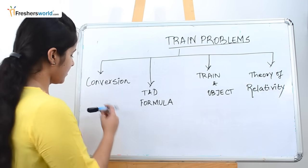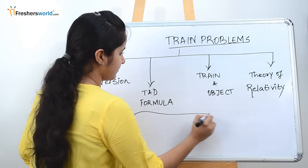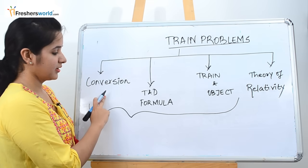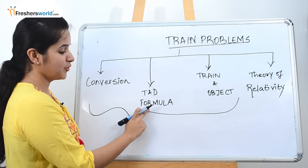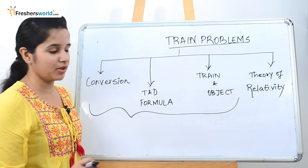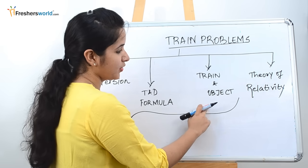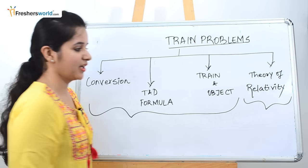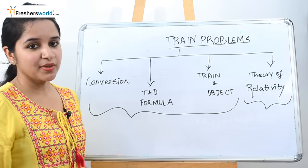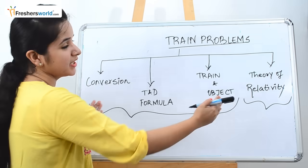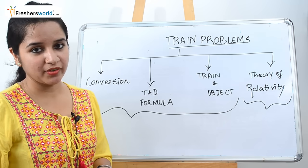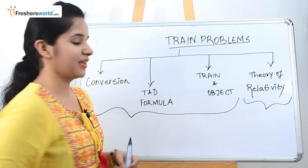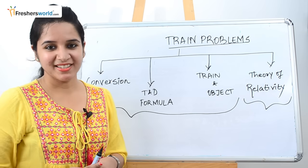Type 1 is conversion, type 2 is the time and distance formula, type 3 is train and object, and type 4 is theory of relativity. In this video we will be covering the first three types of train problems. In the next video we will be covering the theory of relativity. So let's get started.